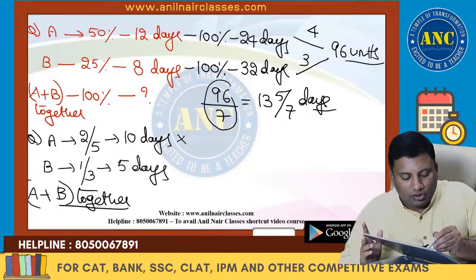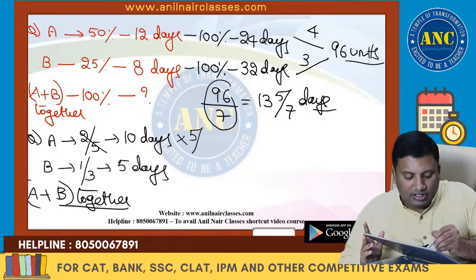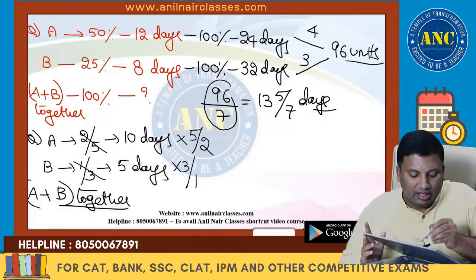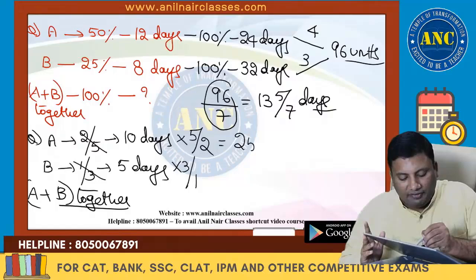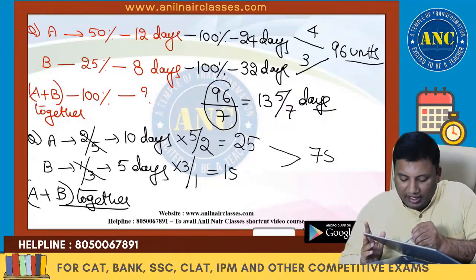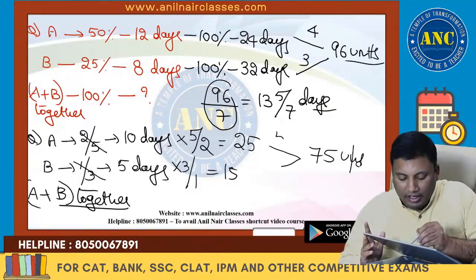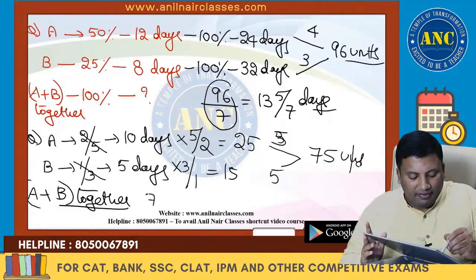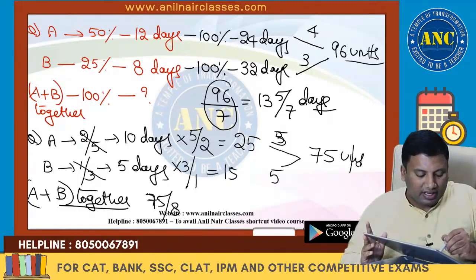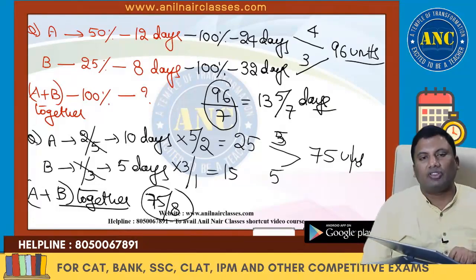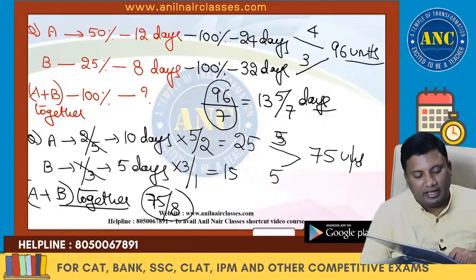For A: 2/5 work in 10 days → full work takes 10 × (5/2) = 25 days. For B: 1/3 work in 5 days → full work takes 5 × (3/1) = 15 days. LCM of 25 and 15 is 75 units. A does 3 units/day, B does 5 units/day. Together: 75 by (3+5) = 75/8 days.